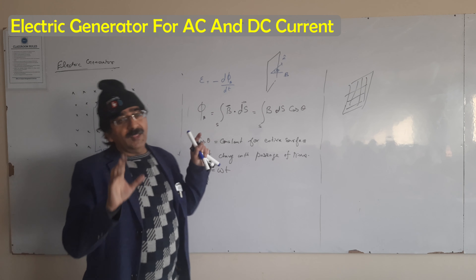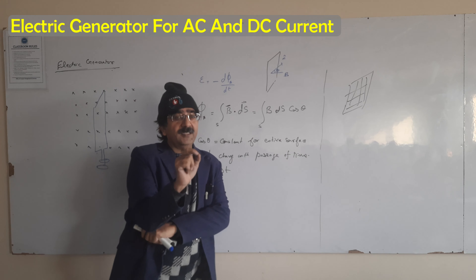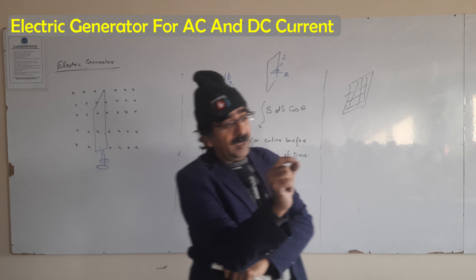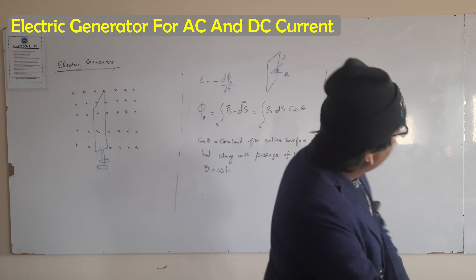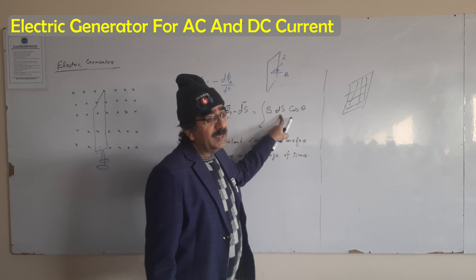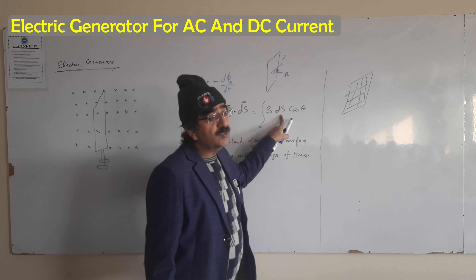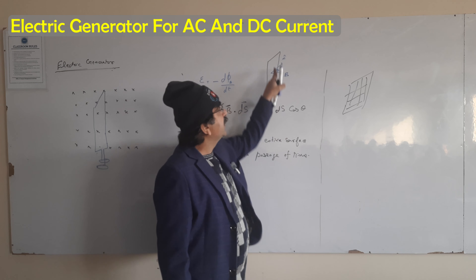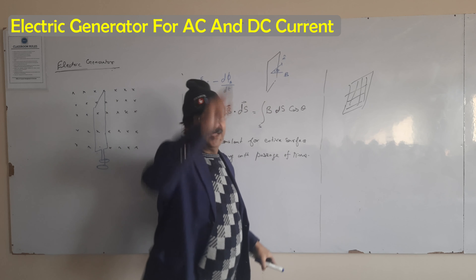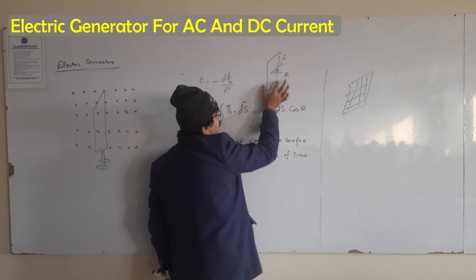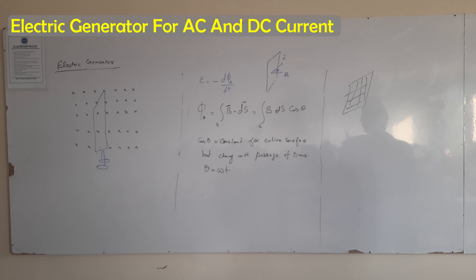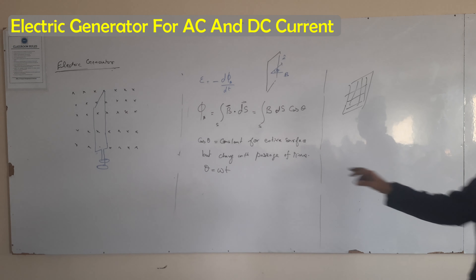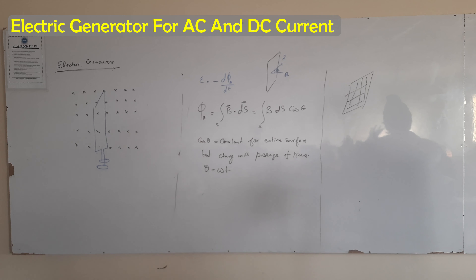I am saying that theta is not constant. Cos theta is a variable because theta is variable. But here we are taking the integration with respect to the surface. When you are trying to find the area, the change in angle across the area will remain the same — that will be the same for the entire surface.